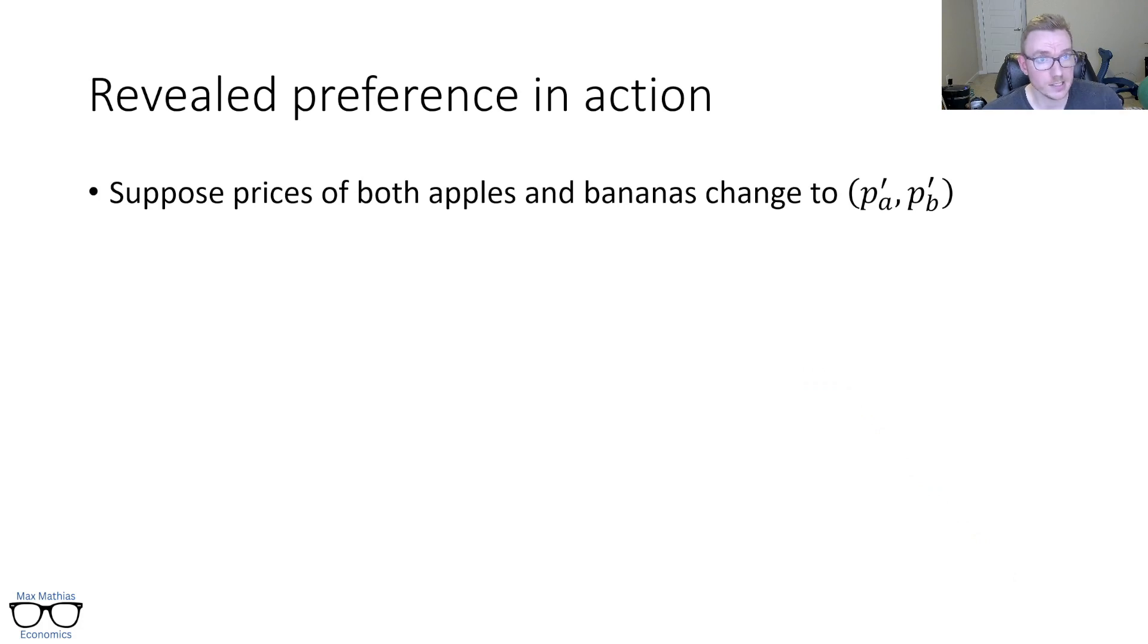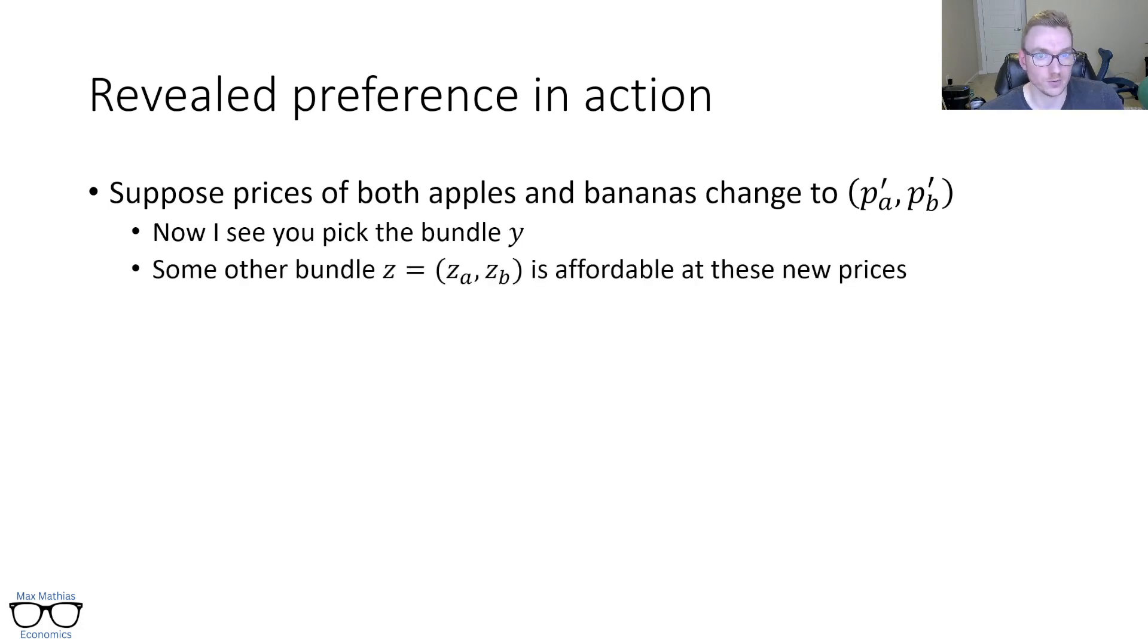So now we're going to say, let's say prices change. So prices of both apples and bananas change to some new values, which we call P prime. Now let's say at these new prices, I see you pick the bundle Y, the same Y from the last slide. And we'll look at some other bundle Z, which is affordable at these new prices.